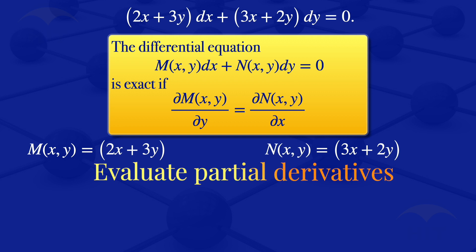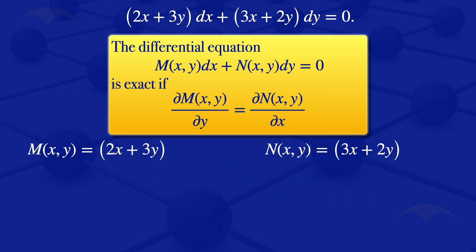I can now go on and evaluate the partial derivative of M with respect to y. When you are taking the partial derivative with respect to y, we will be treating x as if it's a constant. So differentiating 2x + 3y with respect to y, treating x as a constant, we have the partial derivative of M with respect to y is equal to 3.